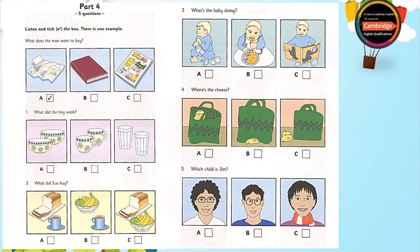3. What's the baby doing? Oh, it's good to be home. Oh, look at the baby. He's trying to take off his shoes. He doesn't like them. I know. And he's hungry. I must cook his supper. Can you read him a story? OK, Aunt Jane.